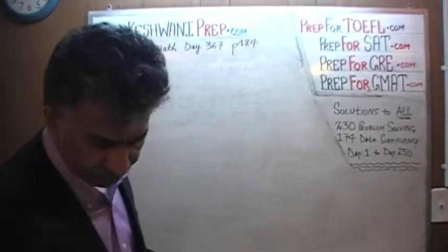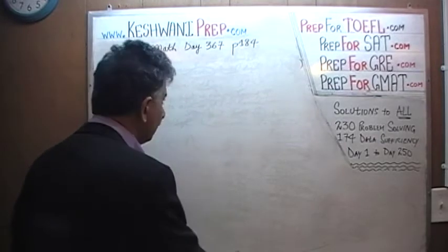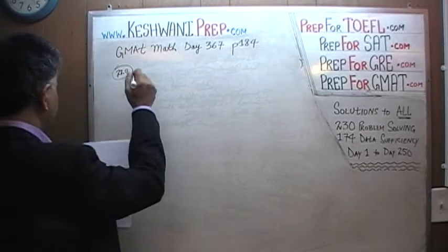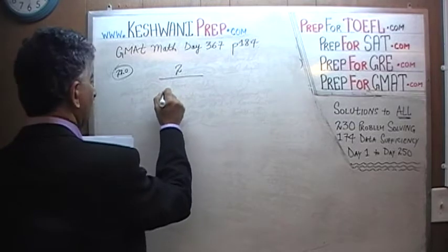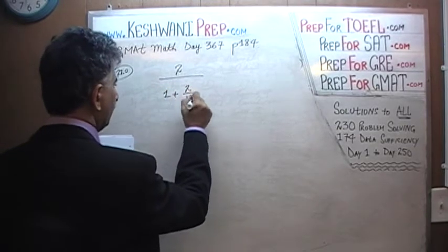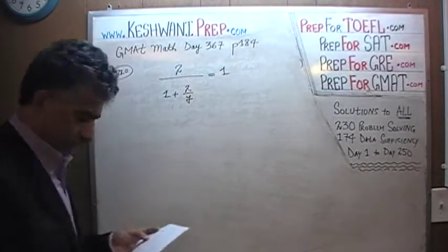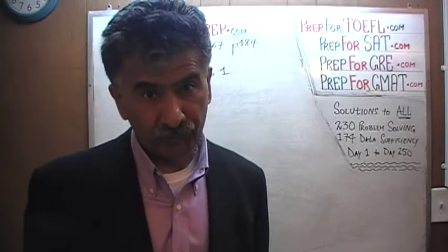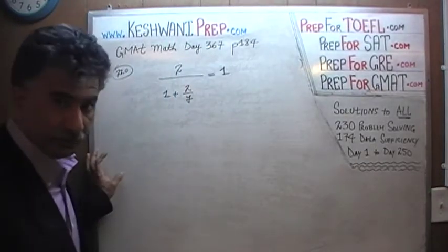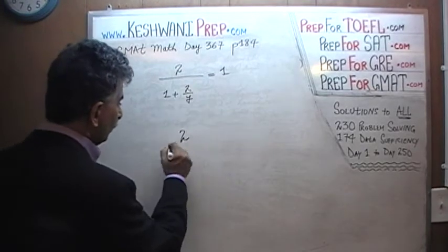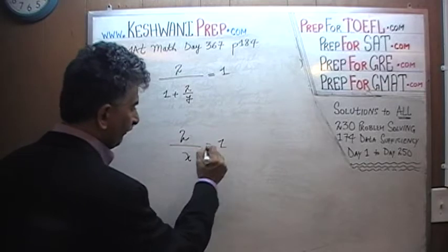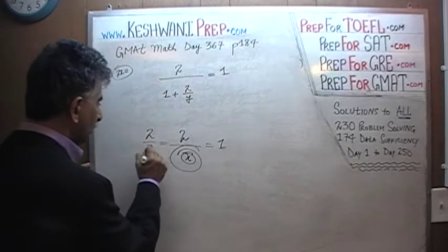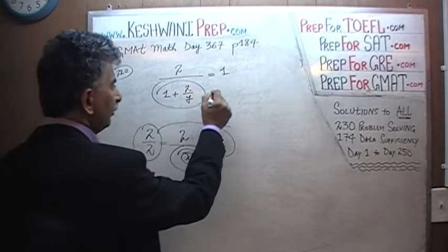Let's see what it has to say. The very first problem on page 184, number 220 says: 2 over (1 plus 2 over y) equals 1. We can solve this in a more traditional way or in a more straightforward way. The most straightforward way is to realize that since it is 2 over some quantity and that equals 1, the quantity must equal 2, because 2 over 2 equals 1.